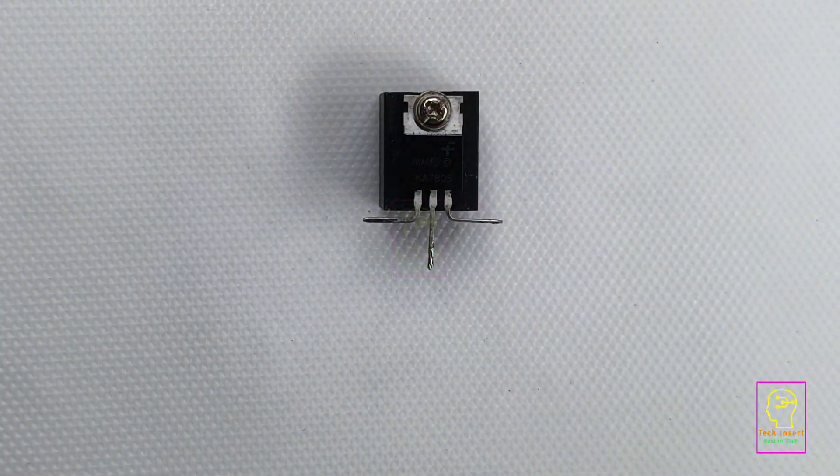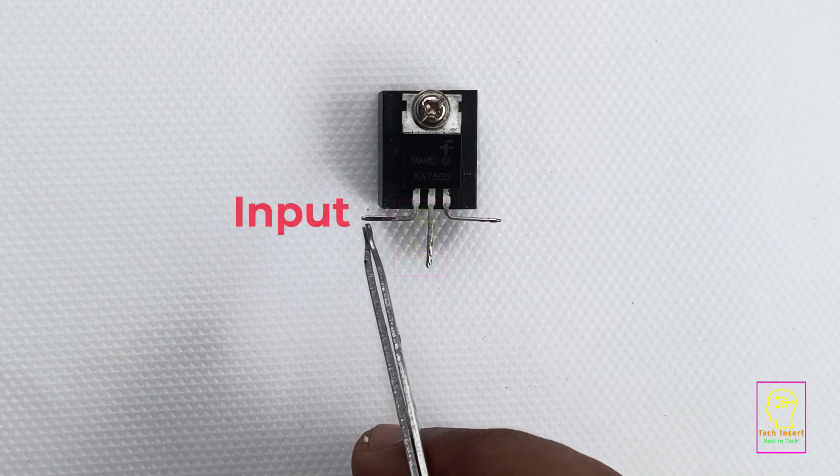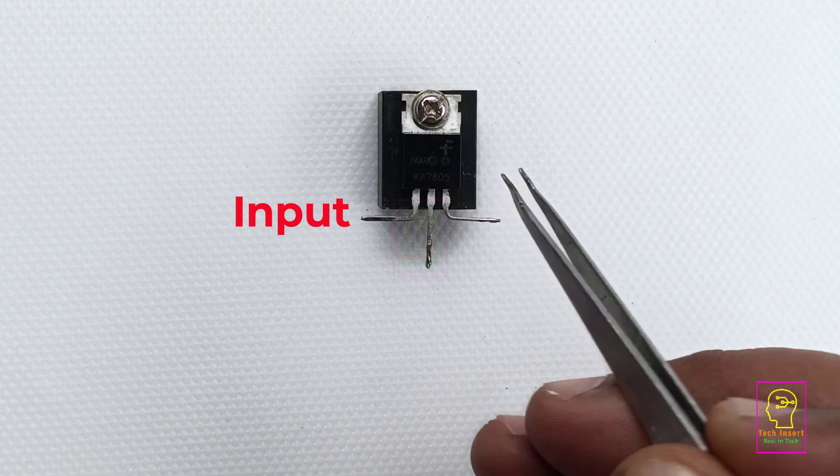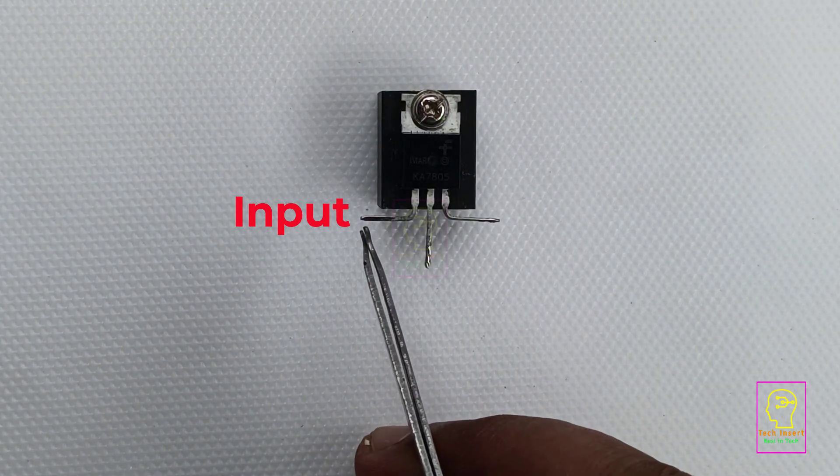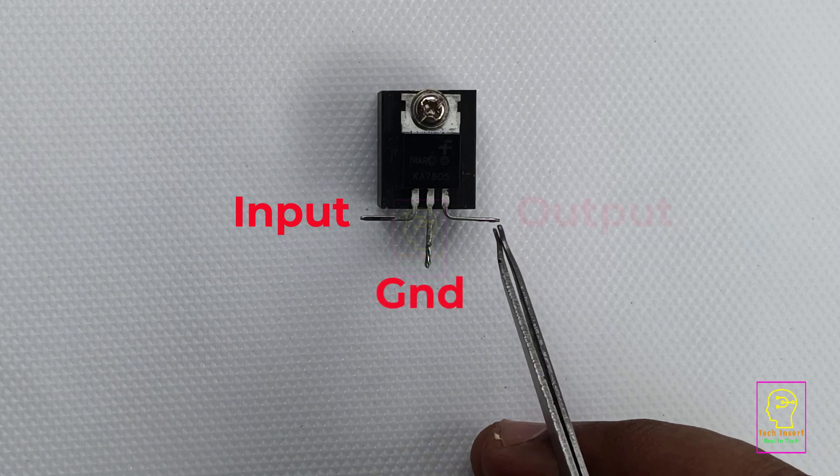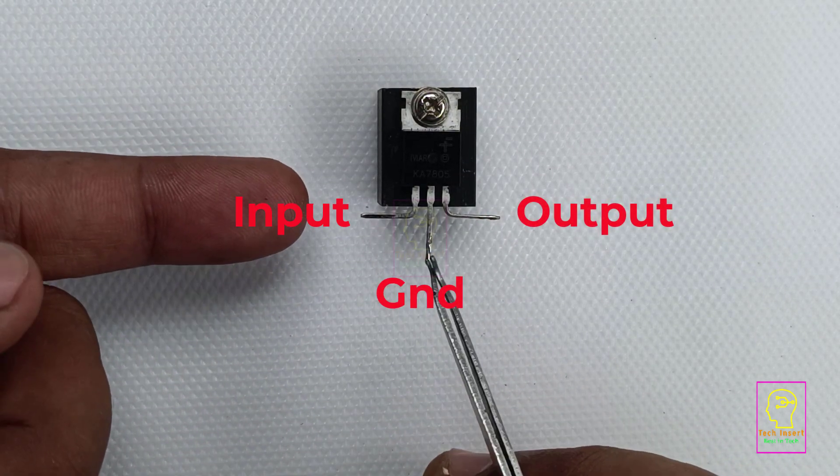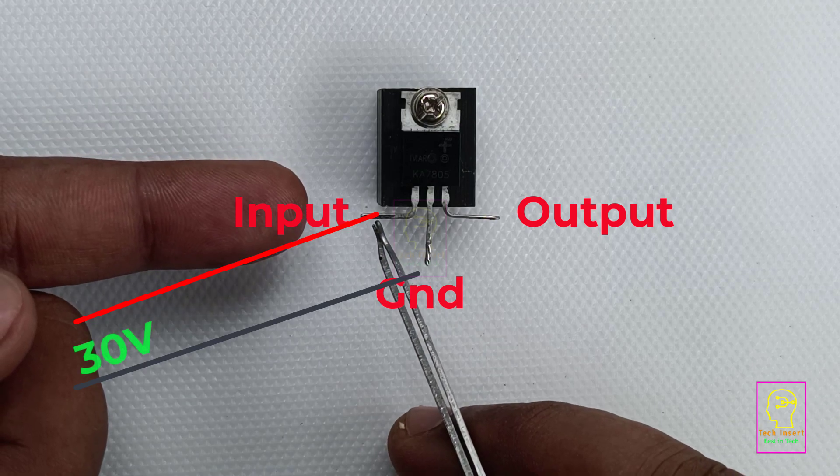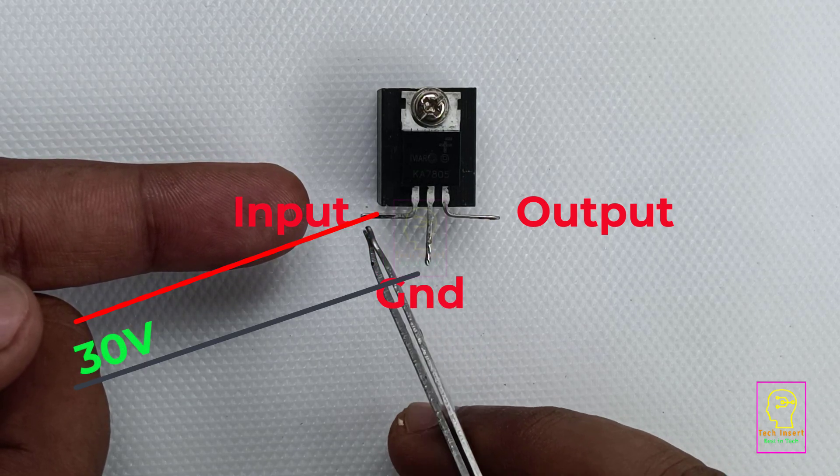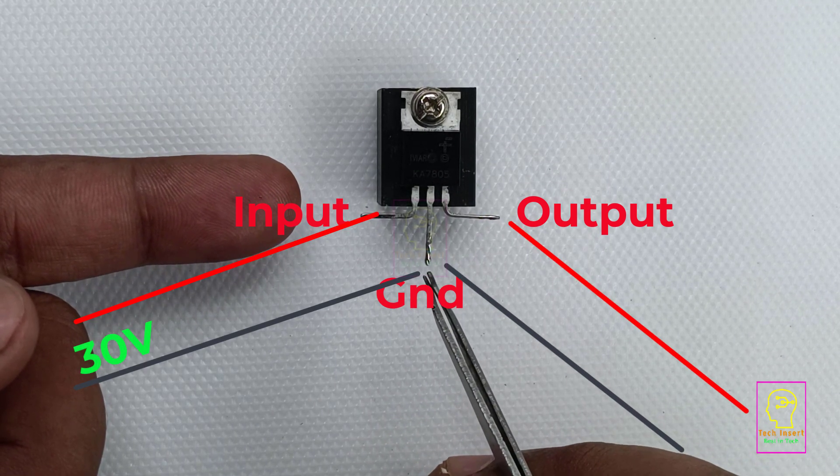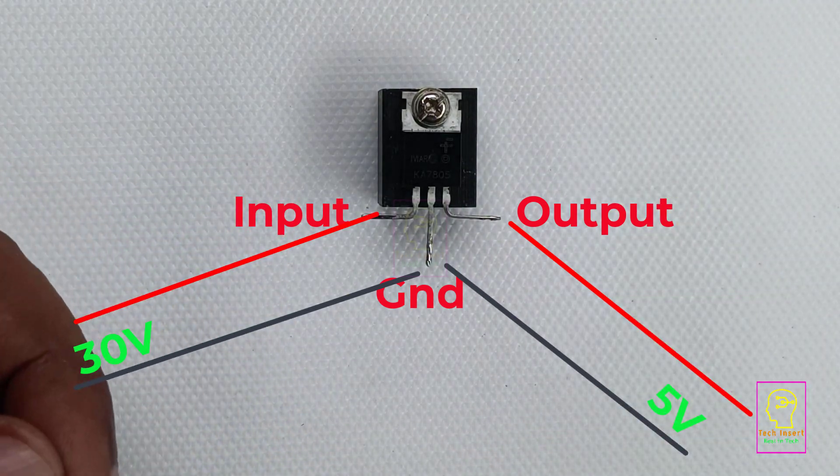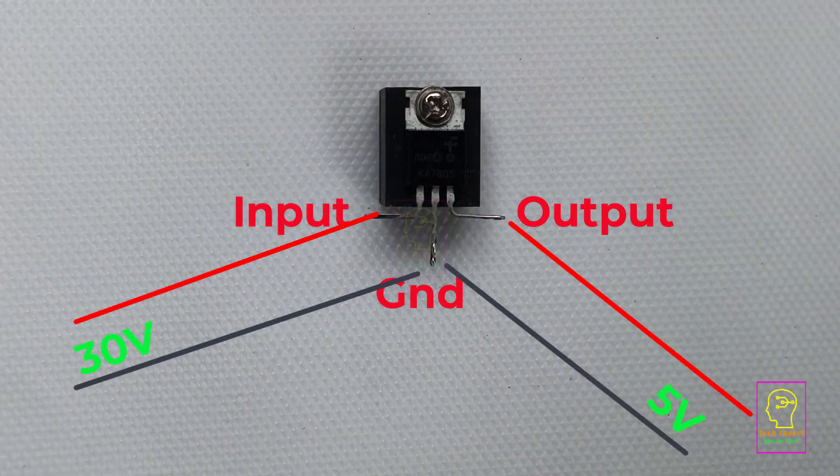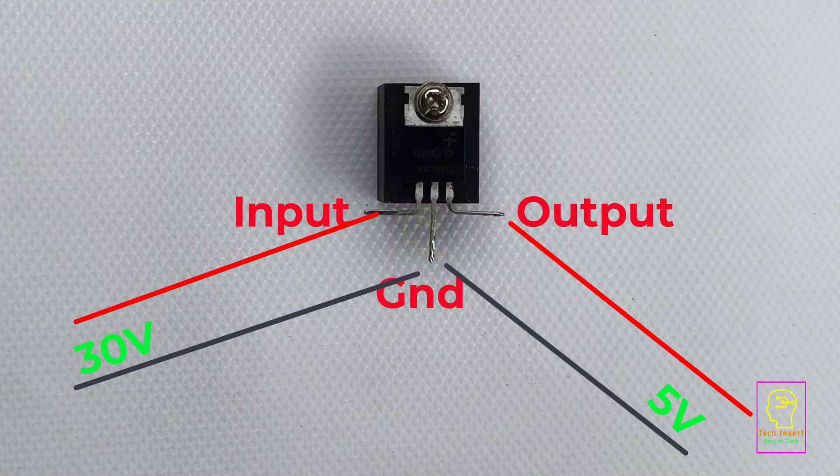First I will give you the pin details of this chip. This is the input pin. That means, if the printed side is placed towards us, then this is the input pin, this is the ground, and this is the output pin. That means, if we are giving a voltage of 30 volt to the input and ground, then we will get 5 volt from the ground and output, and that is a fixed one. You cannot change it, but the hack will do everything upside down.